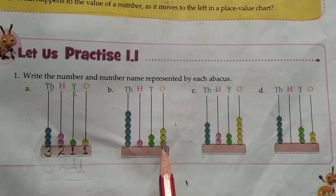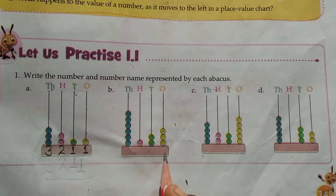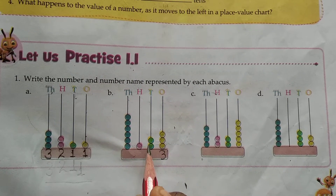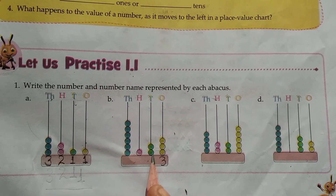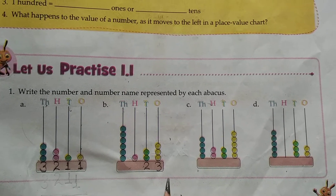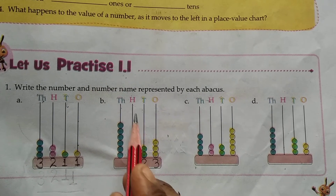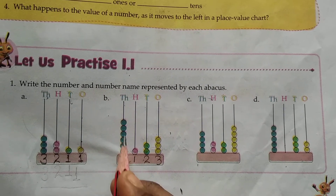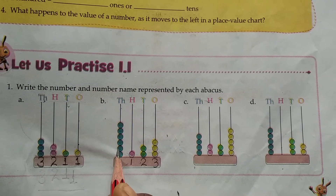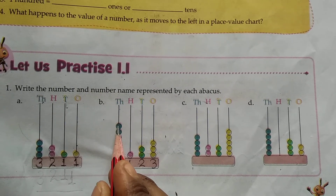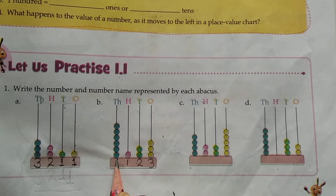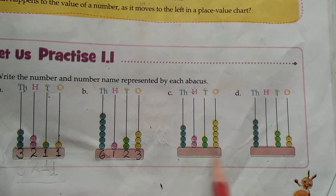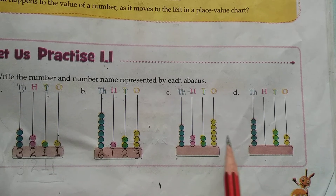Part B. In ones place, 3 bits — we write 3. In tens place, 2 bits — we write 2. In hundreds place, 1 bit — we write 1. In thousands place, 6 bits — we write 6. Now children, you will solve the remaining questions yourself.